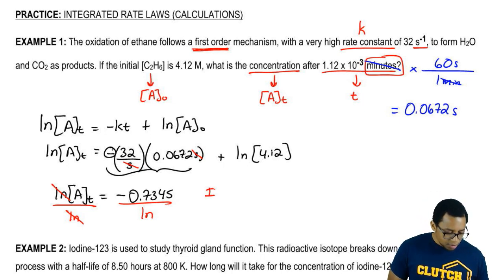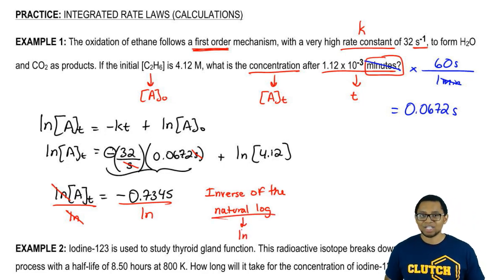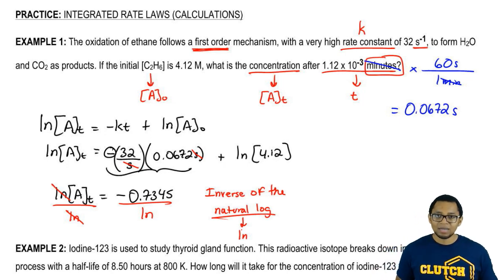Because natural log means LN, so we're taking the inverse of the natural log. So what I'm really saying here is anytime you divide a number by LN, what that really means is it becomes E to that number.